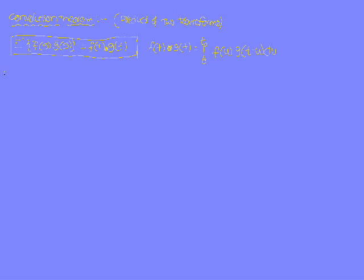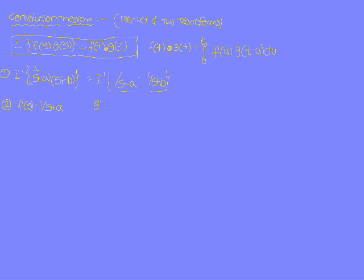Let us consider the first problem: L inverse of 1 / [(s + a)(s + b)]. We rewrite this as L inverse of [1/(s + a)] × [1/(s + b)]. This is a product of two transforms. So we consider f̄(s) = 1/(s + a) and ḡ(s) = 1/(s + b).